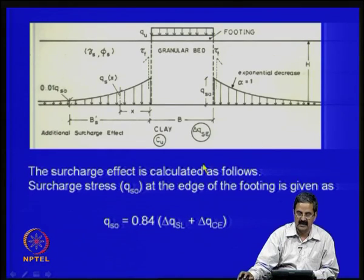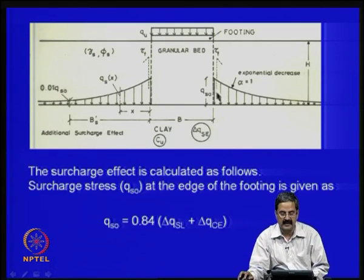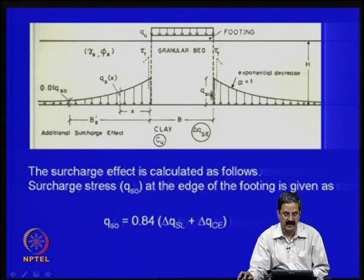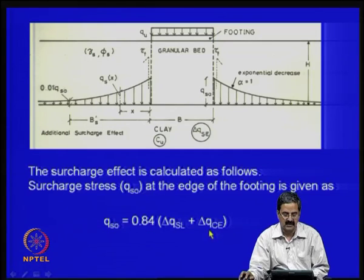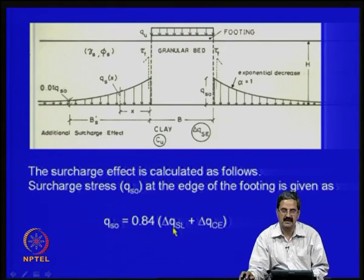There is a simple expression given in the literature where the shear layer effect and the exponential surcharge effect add up. You need to integrate the distribution function, and the result can be taken as 0.84 times the previously computed value if you assume an exponential distribution. Based on these three effects, you are able to get all three contributions.